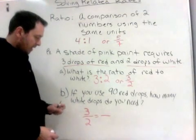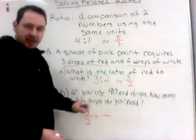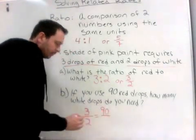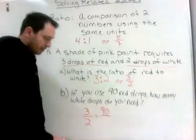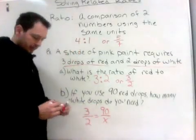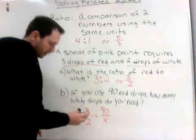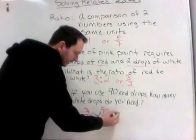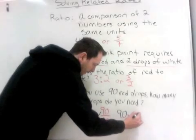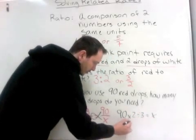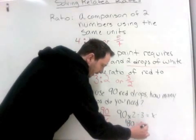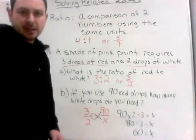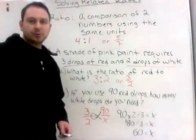And the question gave us 90 red. So, if we had 3 red on top, 2 white on the bottom, we need 90 red on top. Red's on top, red's on top. And we want to know how many white. And now we solve this, as we learned earlier, using the fish technique. 90 times 2 divide 3 equals x, which is 180 divided by 3 equals x. 180 divided by 3 is 60. It will take 60 drops of white.